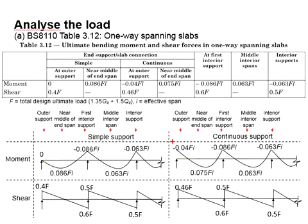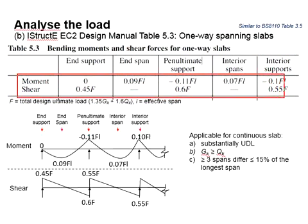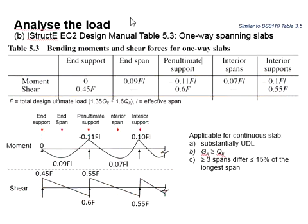So if you have a continuous or simply supported member, you will have to refer to the relevant factors to get the moment and also the relevant factors for the shear. Alternatively, you may refer to this table to determine the moment and shear on the slab. It is also meant for the one-way spanning slab.